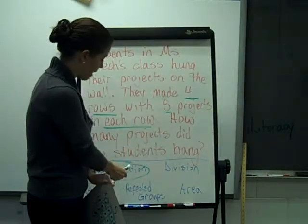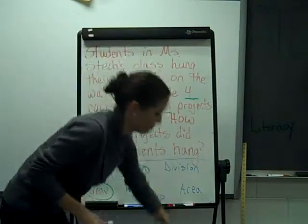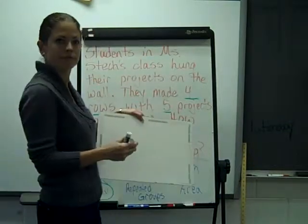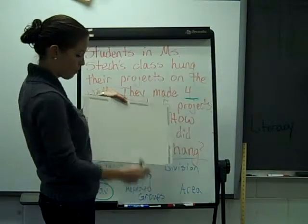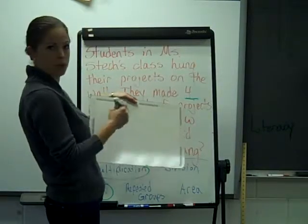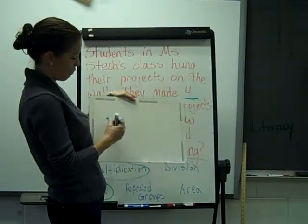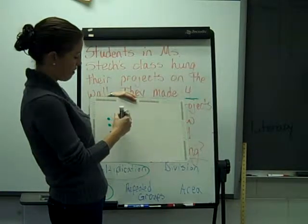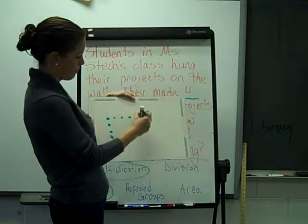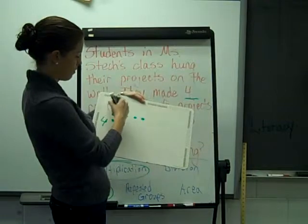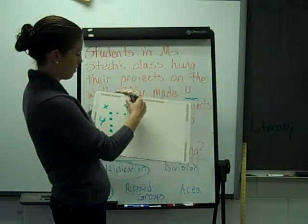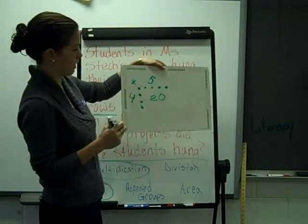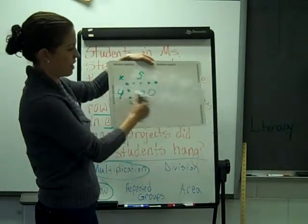It's a multiplication problem and an array. You can also do a quick array. A quick array with that same problem, instead of doing all the dots, would be your 4 rows, 5 in each row, and then your answer of 20 in the middle. That's a quick array instead of writing all the dots.